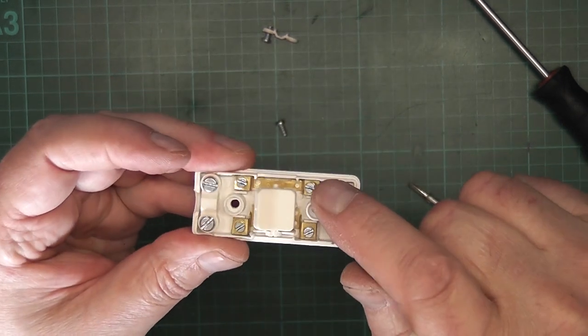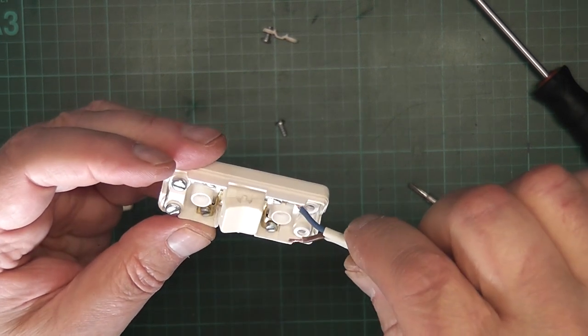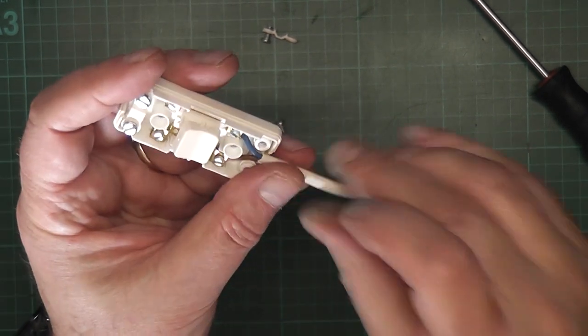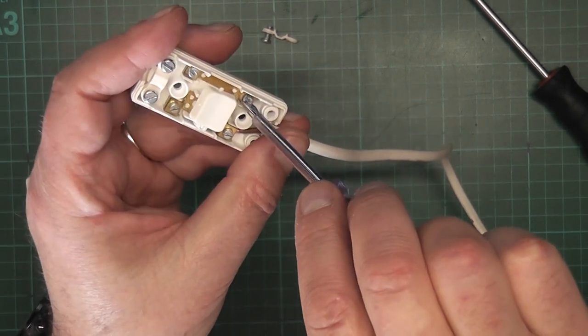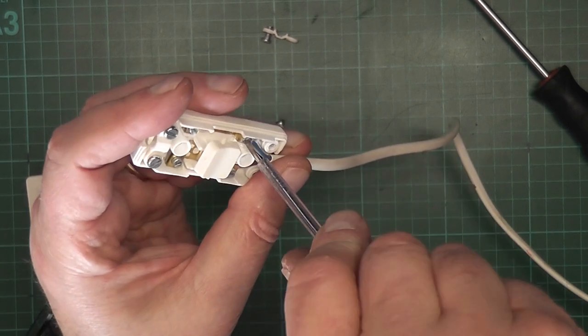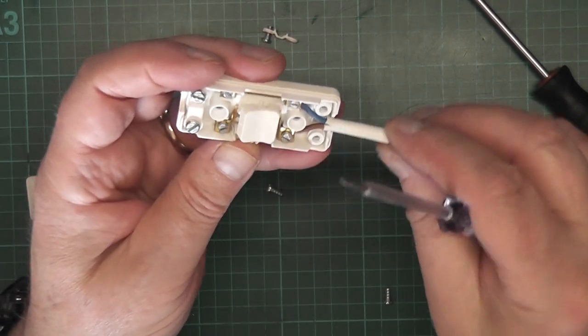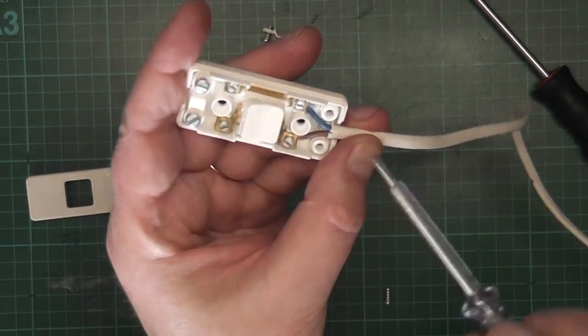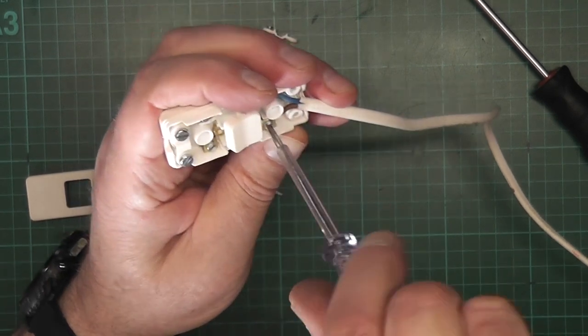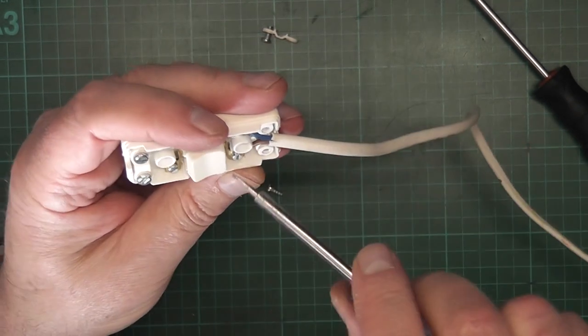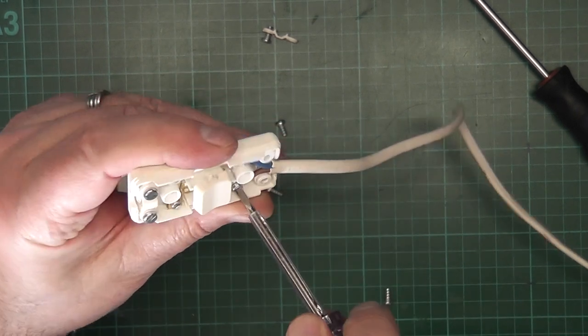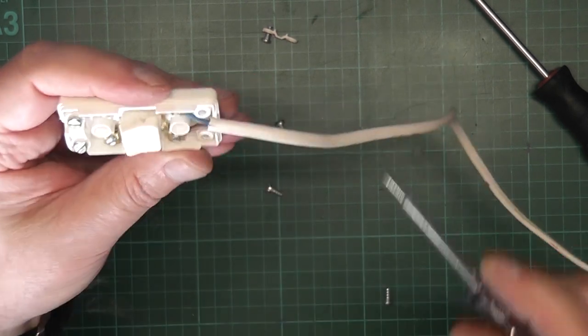This one is your neutral, so let's put the neutral in there. Fit it in, push it underneath the little plate, and then screw it down. Just give it a little gentle tug to make sure that it's good and secure. And with the live, just feed that in underneath the little plate and screw down. Again, just give a gentle tug and make sure they are good and tight.